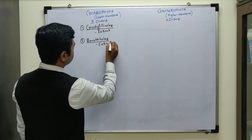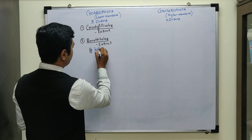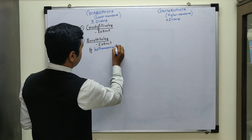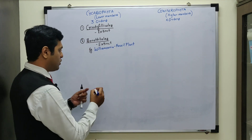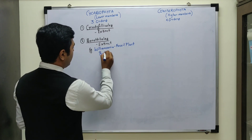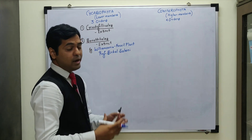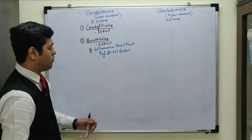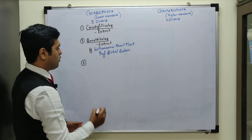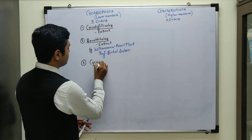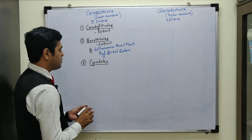One example of the Bennettitales group is Williamsonia. This plant has been found in fossil studies, hence it is also known as a fossil plant. This fossil was mainly studied by Professor Birbal Sahni. In fact, he is known as the father of Indian plant botany. That is about Professor Birbal Sahni.